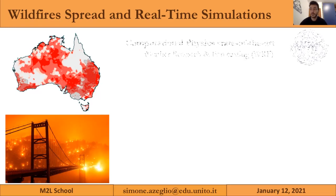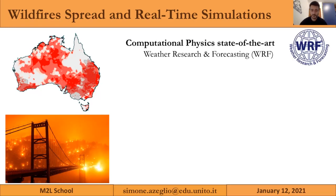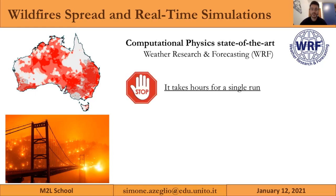The current state of the art from computational physics is the Weather Research and Forecasting model (WRF), which is able to produce accurate predictions, but each simulation takes several hours. This is acceptable for a single run, but not for our needs.